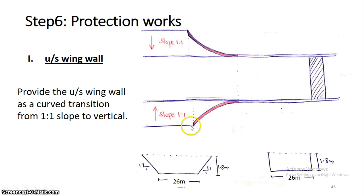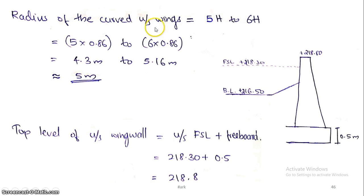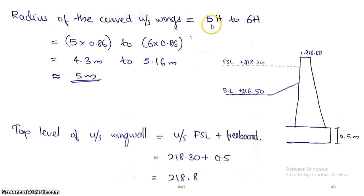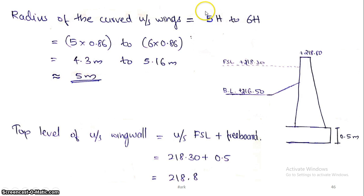The radius of the curved upstream wings is equal to 5H to 6H. If H is 0.86, then 5H is 4.3m and 6H is 5.16m. So we can take 5m, and provide 5m. The radius provided is 5m.